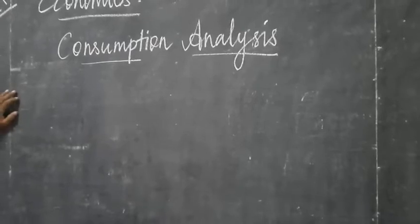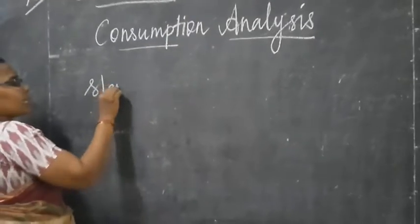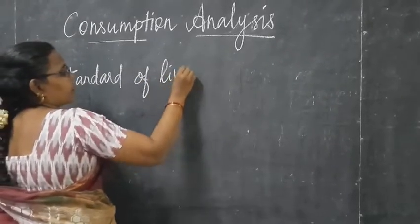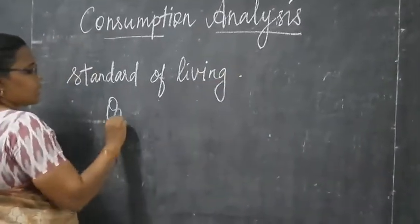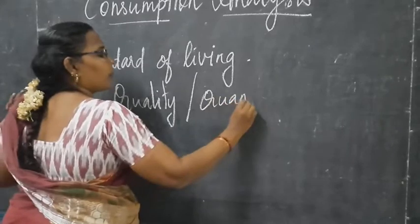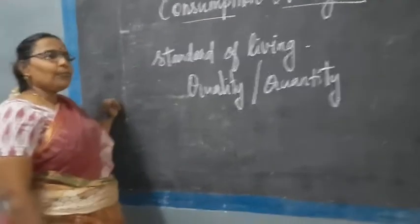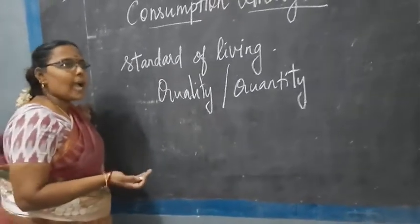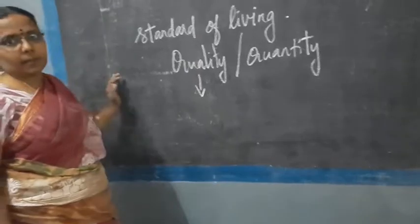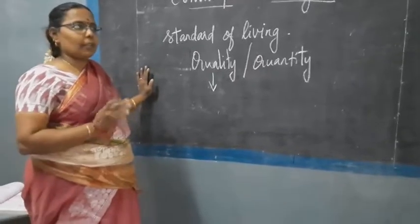The quality and the quantity of consumption determines the standard of living of the people. What do you mean by standard of living? The quality and the quantity determines the standard of living of the people. For example, if you want to buy a branded shirt or branded costume, that is quality basis — you are expecting the quality product. We have some brands, isn't it? Whatever we are buying.